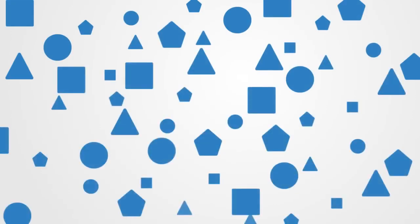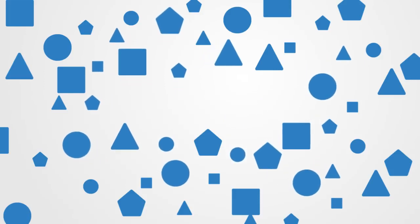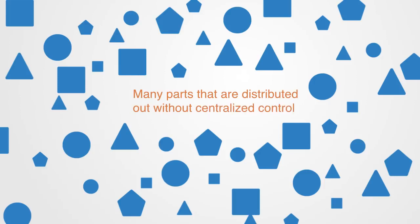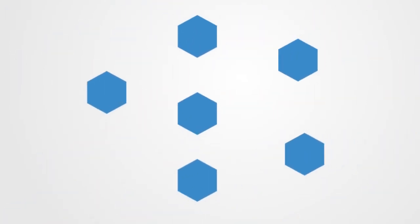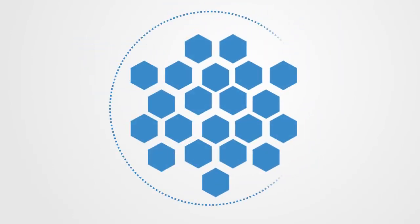Now let's start adding complexity to this. Probably the only property that will be in all definitions of a complex system is that they consist of many parts. Many parts that are distributed out without centralized control. Organization is formed out of the local interactions between the parts through a process of self-organization, organization that gives rise to the emergence of new levels of organization.